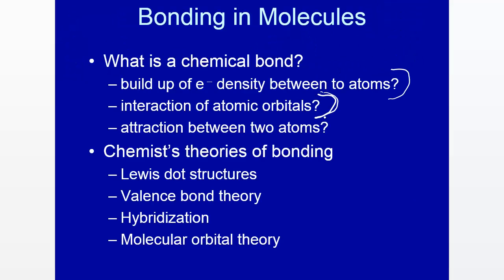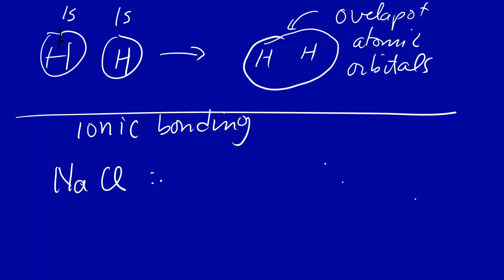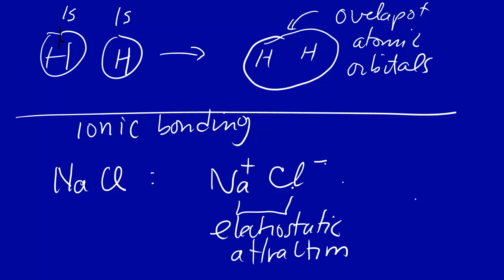Now let's look at another one: attraction between two atoms. Perhaps if we look at ionic bonding — so we have ionic bonding. Remember from introductory chemistry, let's look at sodium chloride. Sodium chloride can be thought of as a sodium ion. The electron is transferred in this bond from the sodium atom to the chloride, leaving sodium with a positive charge and chlorine with a negative charge. So here you have electrostatic attraction between the positive charge and the negative charge — opposite charges attract — and therefore this is an ionic bond.